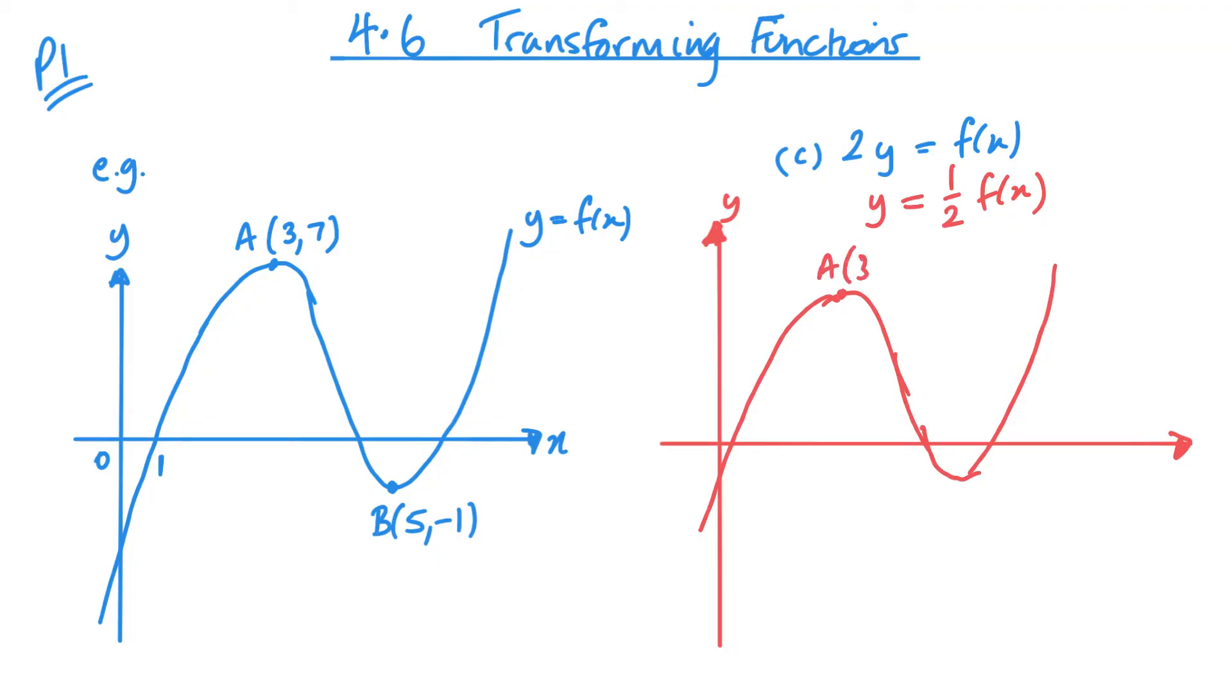So something like that. So A is going to be 3, 7 over 2 or 3.5. B is going to be 5 minus a half. And I'm going to cross here. We don't know. And this is still the value 1. Just slightly misdrawn there.